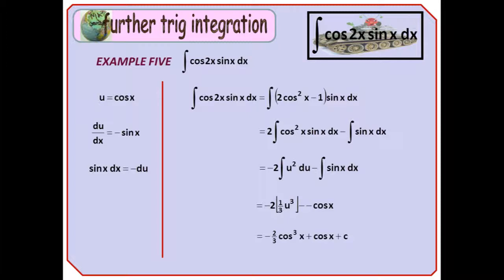We have made it to example 5, which is the integral of cos 2x sin x dx. My tip is to replace the cos 2x with its cos squared x version, which enables us to apply the integration by substitution method, with the substitution getting rid of the sin x at the same time as the dx.